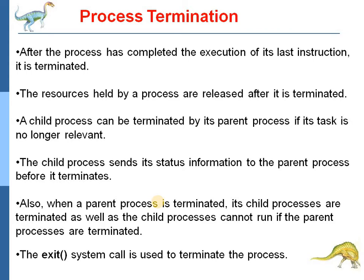After the process has completed the execution of its last instruction, it is called process termination. The resources held by a process are released after it is terminated. A child process can be terminated by its parent process if a task is no longer needed. The child process sends its status information to the parent process before it terminates. The exit system call is used to terminate the process.